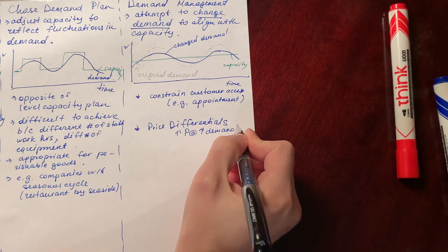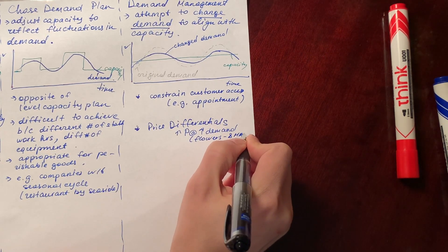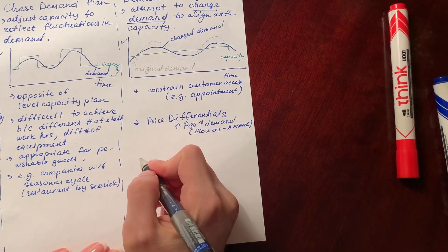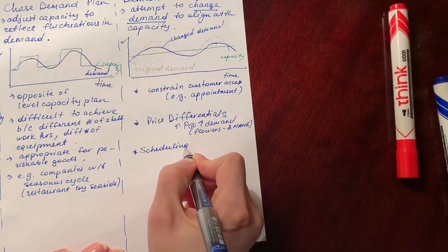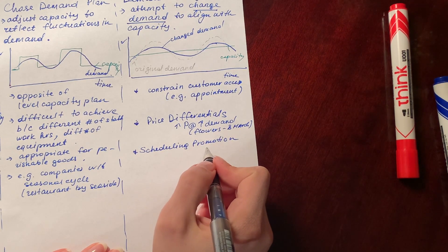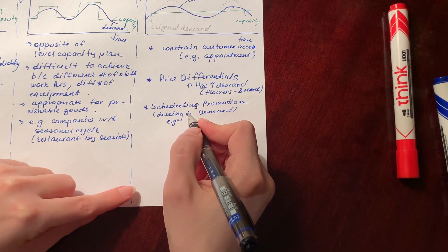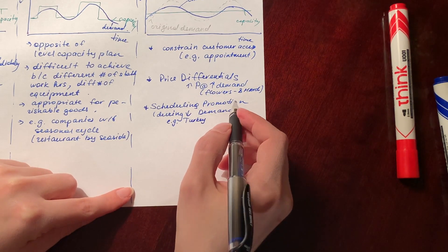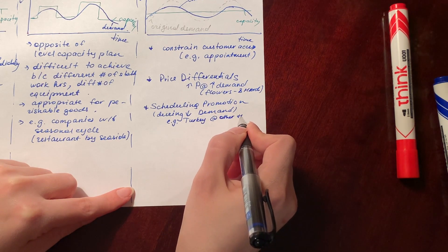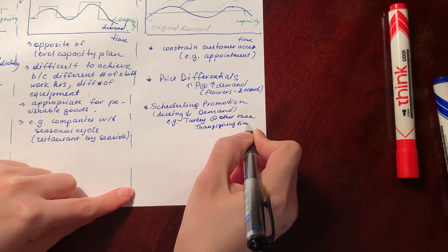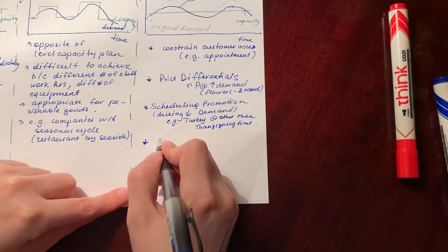The second way is price differentials. The most obvious mechanism is to change demand through price. For example, the price for flowers skyrockets during International Women's Day on March 8th because there is high demand. The third way is scheduling promotions. In the United States, turkey is popular during the Thanksgiving period; however, throughout the rest of the year the demand is very low, so offering promotions during low demand periods is a way to influence demand for turkey. Similarly, gyms offer incentives or cheaper rates during off-peak periods — if you go before 4 or 5 pm on weekdays, you are likely to get a discounted price.